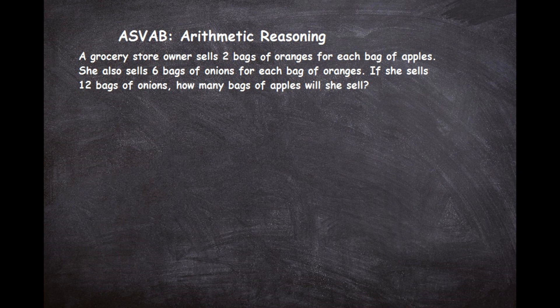What we want to do is set this up as a one-variable system because it's all interrelated. If you look at the beginning, it says two bags of oranges for each bag of apples, so oranges are related to apples. The second part says she sells six bags of onions for each bag of oranges, so onions are related to oranges, and oranges are related to apples. Therefore we can do it all with one variable.